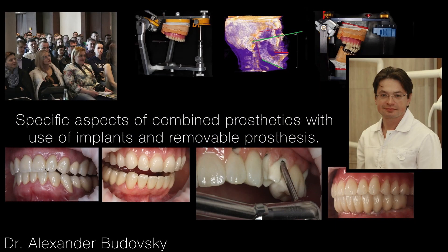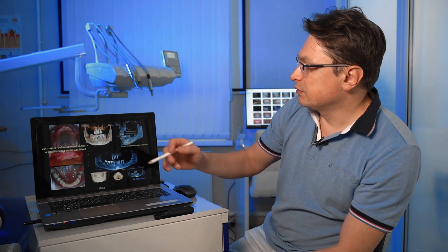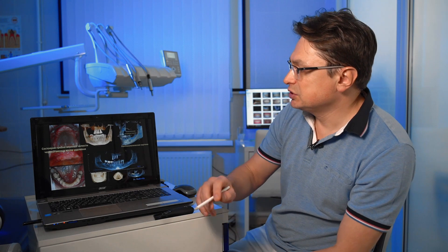This is the case where we provide prosthetics to the patient with a fixed construction on implants on the lower jaw. We would like to install implants on the upper jaw as well, but there wasn't enough hard tissue, so we decided to use a simple removable prosthesis there. Pay attention to what the situation was at the moment of the patient's referral.